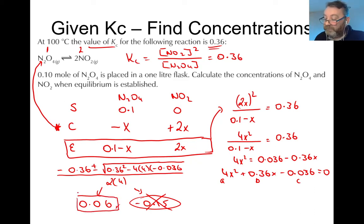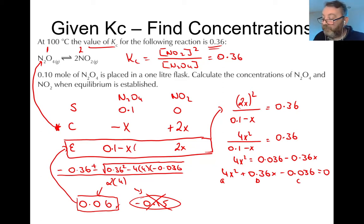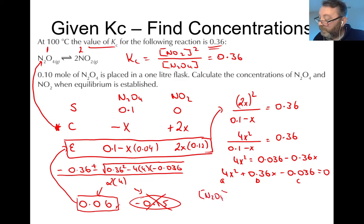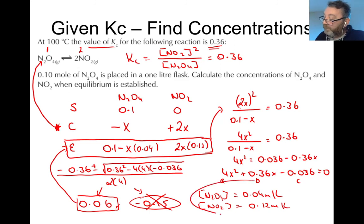Bring X equals 0.06 back to the equilibrium line to convert algebraic expressions into actual concentrations. The concentration of N₂O₄ at equilibrium is 0.1 minus 0.06 equals 0.04 mol/L. The concentration of NO₂ at equilibrium is 2 × 0.06 equals 0.12 mol/L. Those are the concentrations of N₂O₄ and NO₂ at equilibrium — that's the answer.